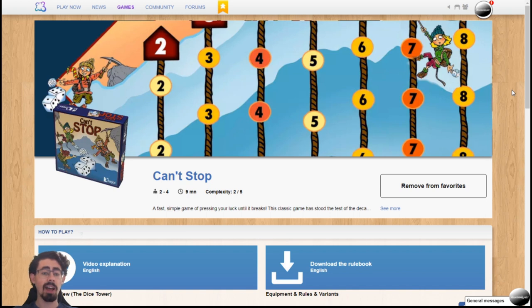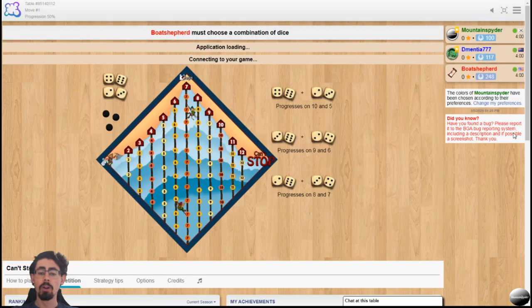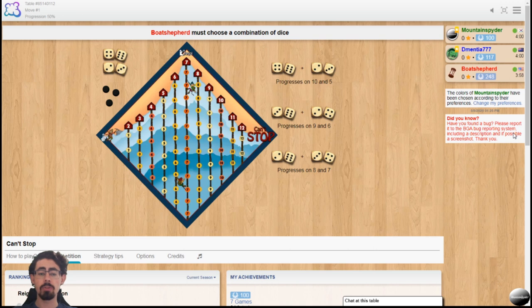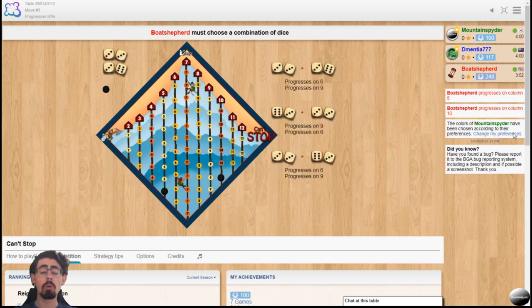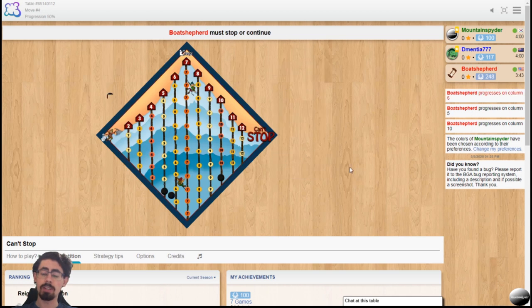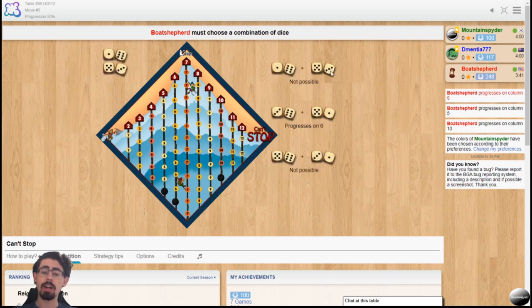So I'll jump in with our first game. Jumping into this game, Can't Stop, it's a really simple concept. You roll 3 sets, you essentially roll 3 times with 4 dice. You've got your 3 different sets of dice with 4 dice in each set.